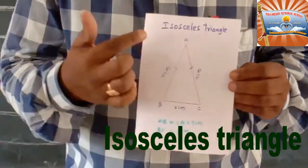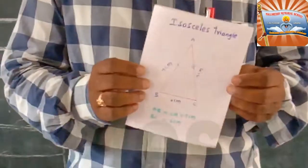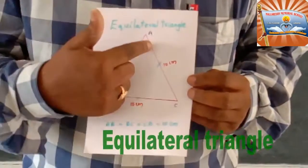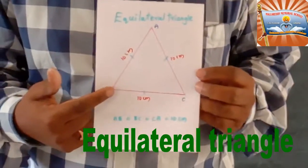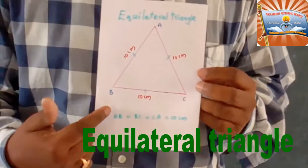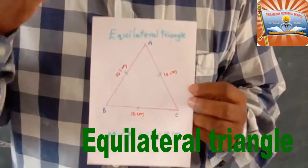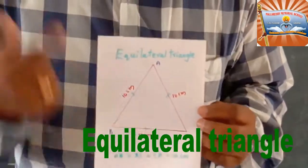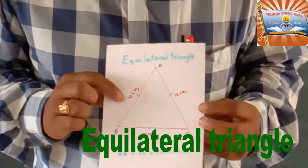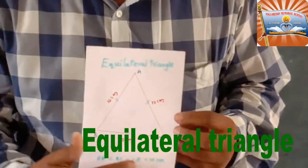The third type of triangle is equilateral triangle. In this triangle, we can see all the sides are equal. So the triangle with all sides are equal is called equilateral triangle. You can see all the sides, AB is 10 cm, BC is 10 cm, and CA is 10 cm.